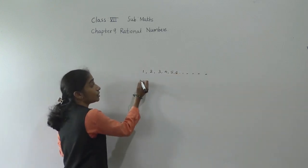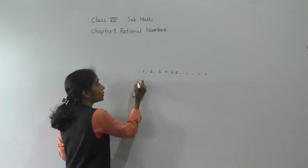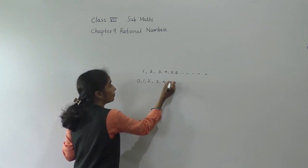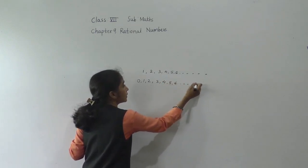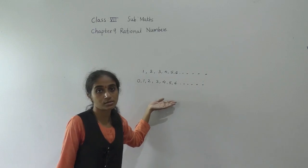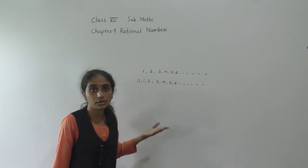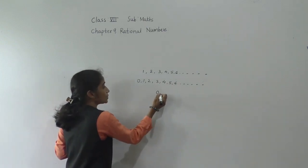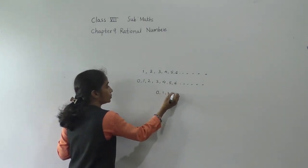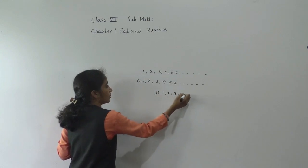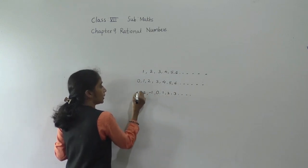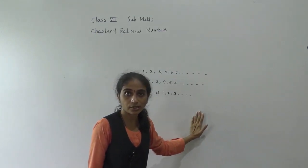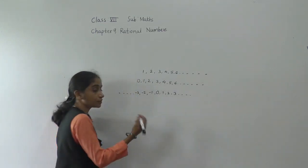Then the whole numbers — what are the whole numbers? 0, 1, 2, 3, 4, 5, 6 — these are the whole numbers. Now integers. Integers means positive and negative both. See: 0, 1, 2, 3, minus 1, minus 2, minus 3 — these are the integers.